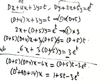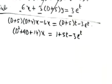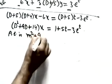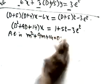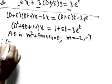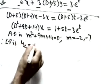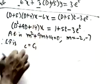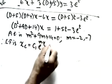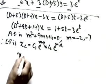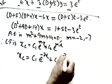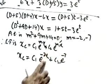Now solve the auxiliary equation: m² + 9m + 14 = 0, giving m = −2 and m = −7 (since 7 × 2 = 14, 7 + 2 = 9). The complementary function is xc = c₁e^(−2t) + c₂e^(−7t).